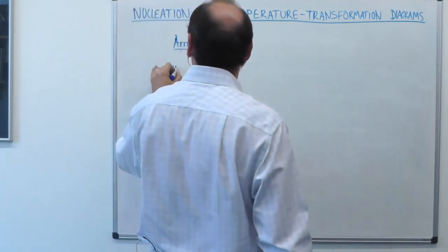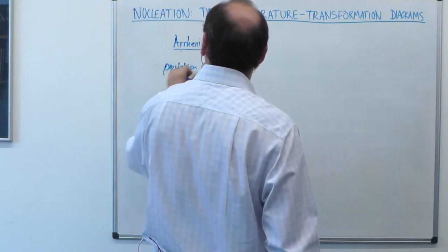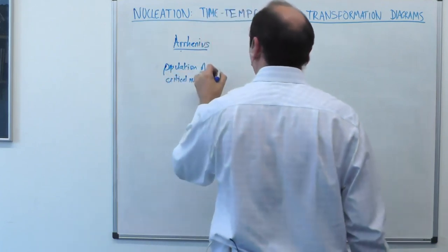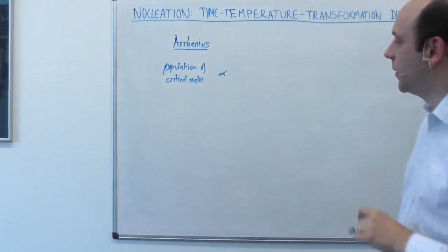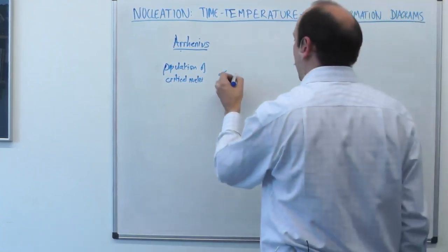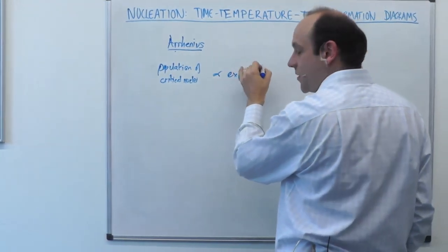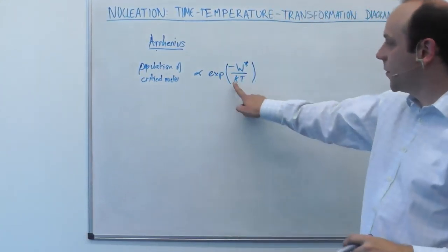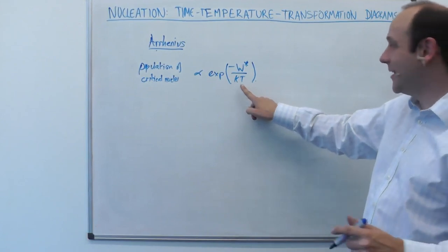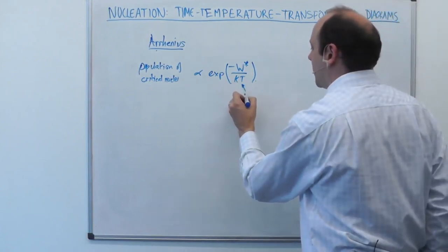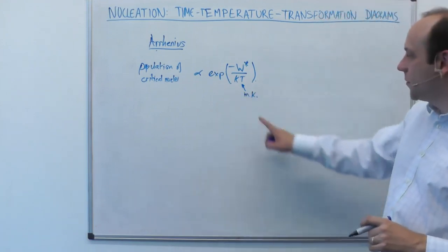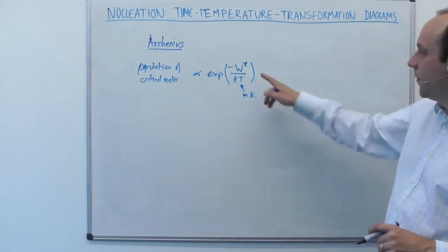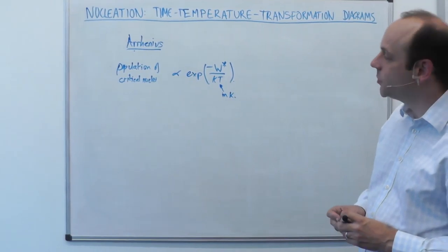The population of critical nuclei — ones greater than R* — is proportional to the exponential of minus W* over kT, where k is Boltzmann's constant, T is temperature in absolute units (Kelvins), and W* is our energy barrier for nucleation derived in the last segment. Science happens in Kelvins, not in degrees C — you always need to use Kelvins in this sort of equation.